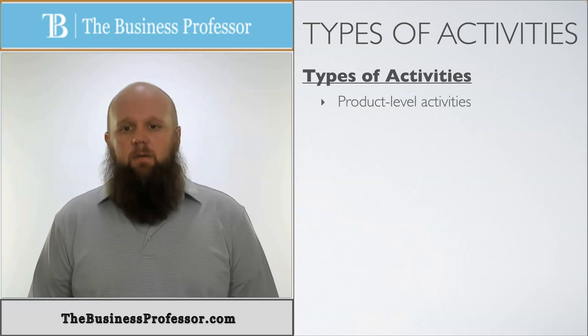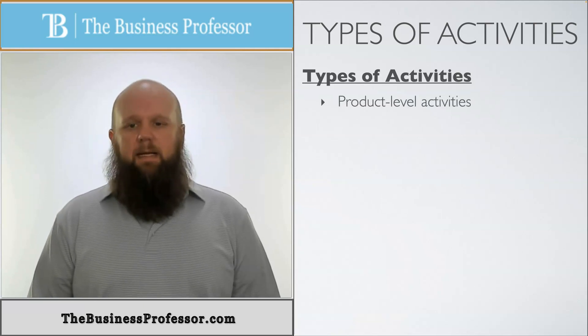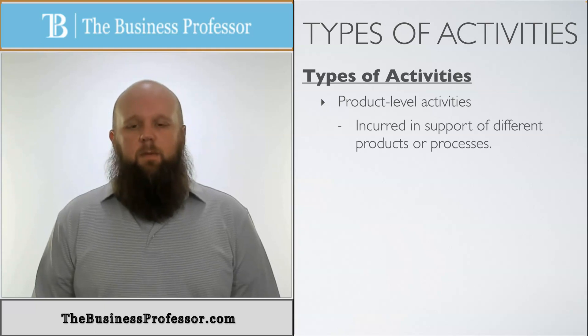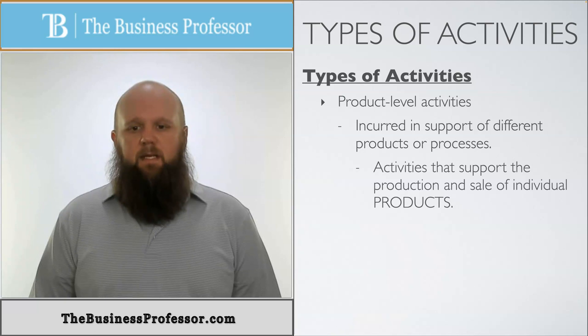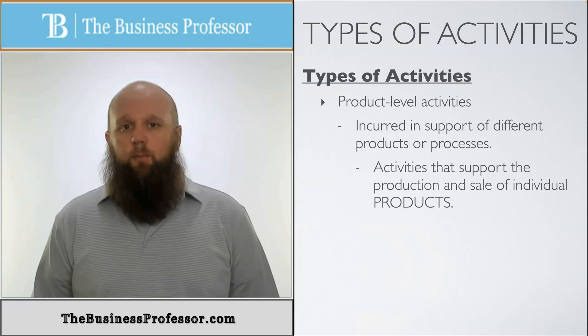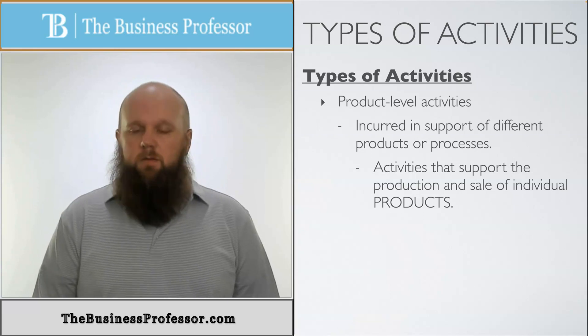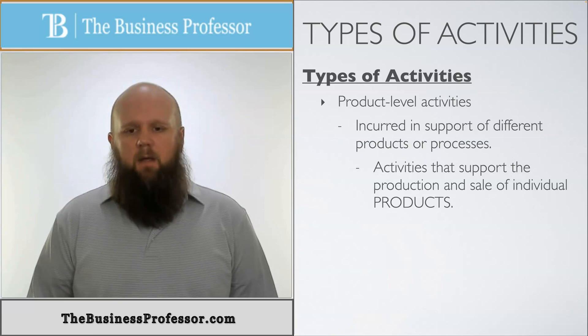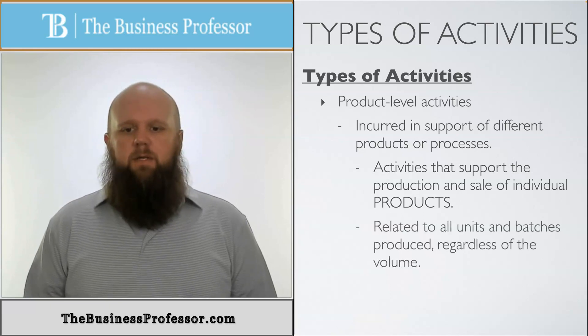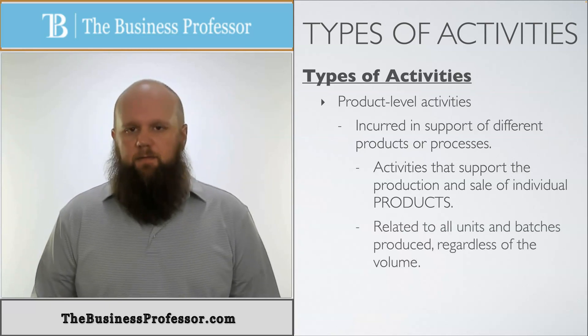The next one is going to be product-level activities. This is incurred in support of different products or processes. The activities here are the ones that support the production and sales of an individual product. So we're not looking at units, we're not looking at batches, we're looking at the product in general. This is related to all units and batches produced, regardless of the volume.